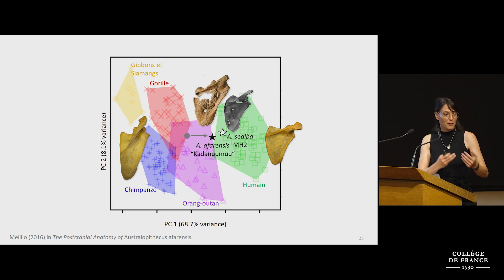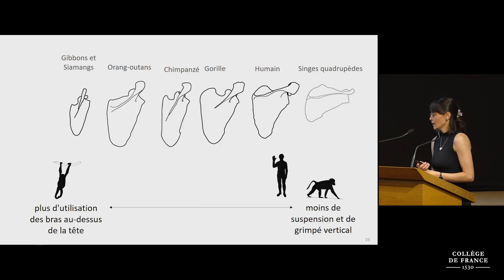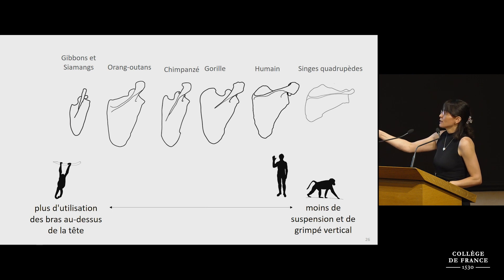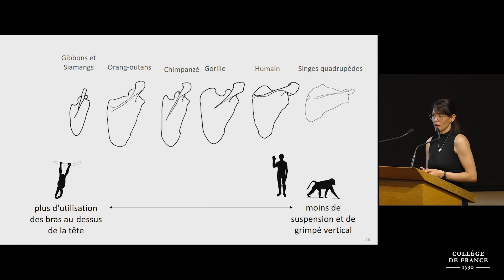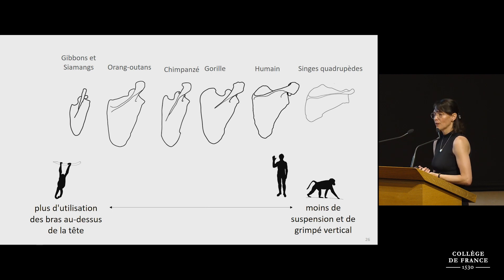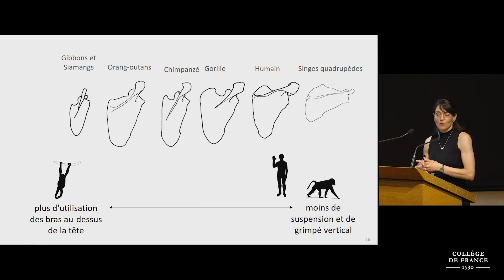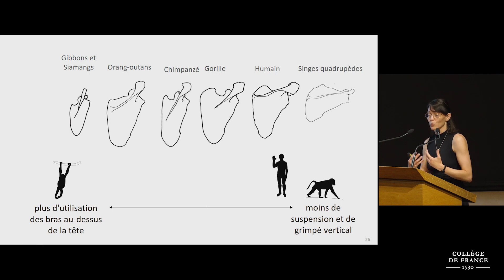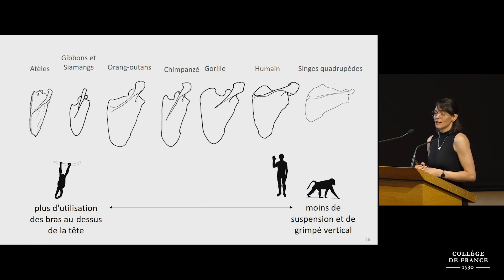This series of fossils demonstrates the nature of morphological change, but the question that follows is: what are the functional implications? It's clear these features relate to using the arms overhead and locomotion, because primates with a greater reliance on vertical climbing and suspension share the oblique morphological pattern, while those with lesser or no reliance on these behaviors show the more transversely oriented pattern. We also have evidence of evolutionary convergence, because highly suspensory New World monkeys have independently evolved this scapula shape.